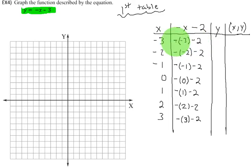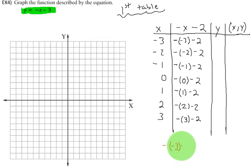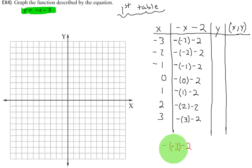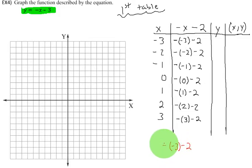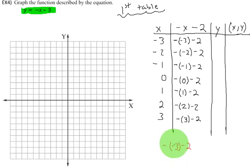I can use parentheses to plug in the values — so negative, then negative 3 in parentheses, minus 2. I'm just going to fill out the entire column before we move forward. So I have: negative (negative 2) minus 2; negative (negative 1) minus 2; negative (0) minus 2; negative (positive 1) minus 2; negative (positive 2) minus 2; and negative (positive 3) minus 2.